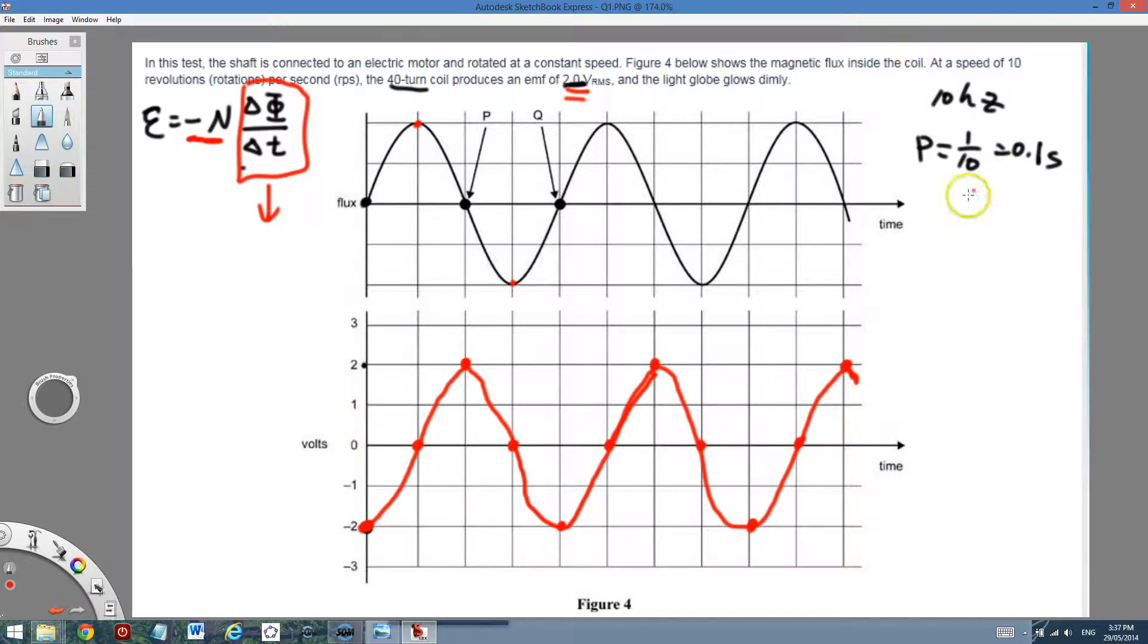Now, the next part will be labeling the time. Each period is 0.1 second. So let's label it. From here, from the tip to a tip is one period. So that's 0.1. This must be 0.05. And this must be 0.025 seconds.